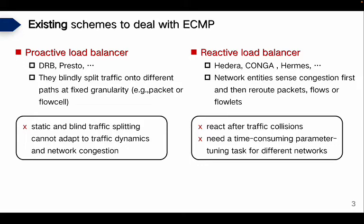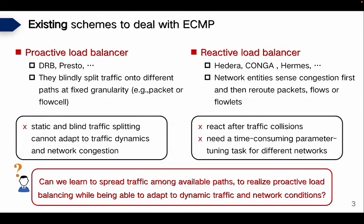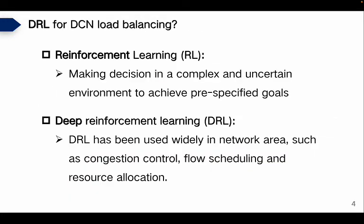We pose the question: can we learn to spread traffic among available paths to realize proactive load balancing while being able to adapt to dynamic traffic and network conditions? We attempt to answer this question by investigating reinforcement learning, RL. RL is an area of machine learning concerned with decision-making in complex and uncertain environments to achieve goals. RL could be more powerful with the help of DNNs, thus becoming DRL. In fact, DRL has been used widely in network areas such as congestion control, flow scheduling, and resource allocation.